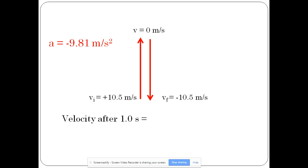If we're looking for final velocity, we do have an initial velocity, we have a time, we have an acceleration. So what equation could we use? Look at your sheet. And if you say VF equals VI plus AT, you're correct.